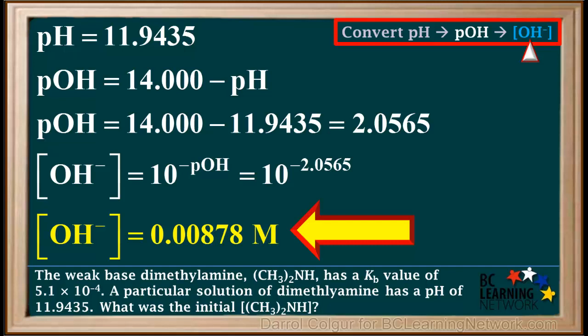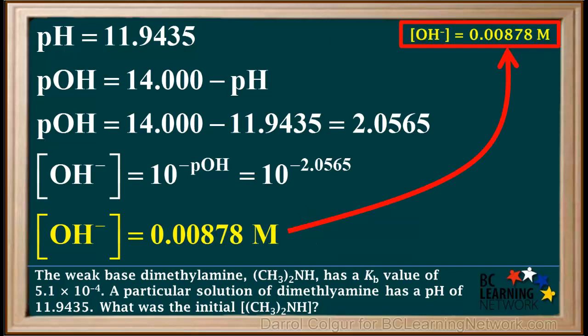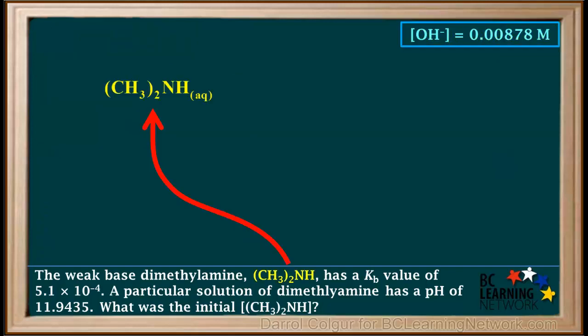So we can now state that the hydroxide ion concentration is 0.00878 molar, and we'll make a note of that up here. Now we will write the equilibrium equation for the ionization of dimethylamine.